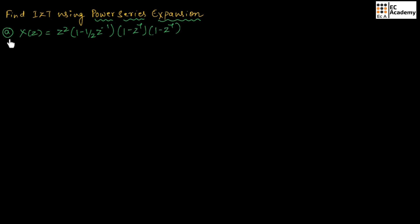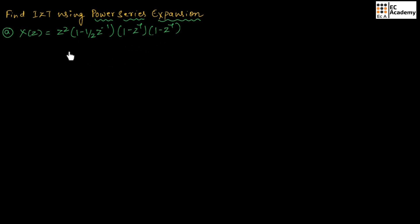Let us consider the first problem where X of Z is given as Z squared into (1 minus 1/2 Z inverse) into (1 minus Z inverse) squared. In the first step, we need to multiply the first two terms and the second two terms.